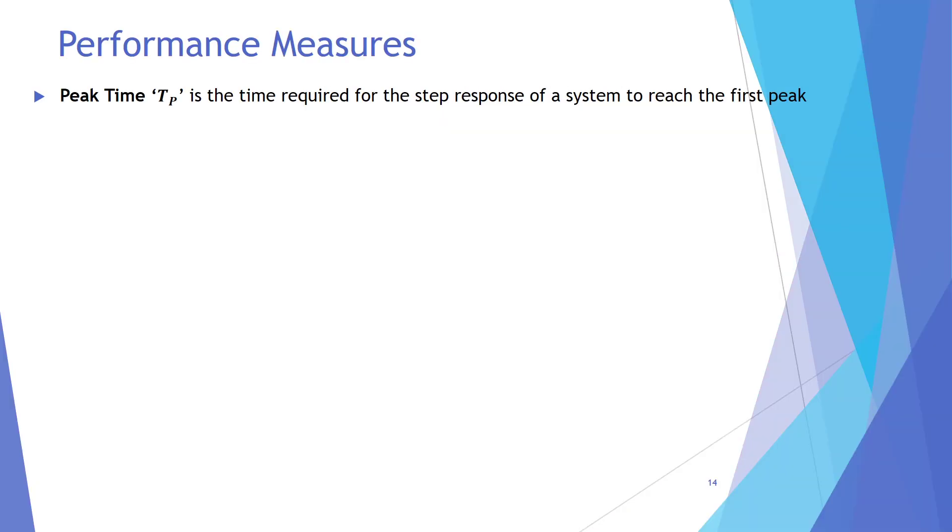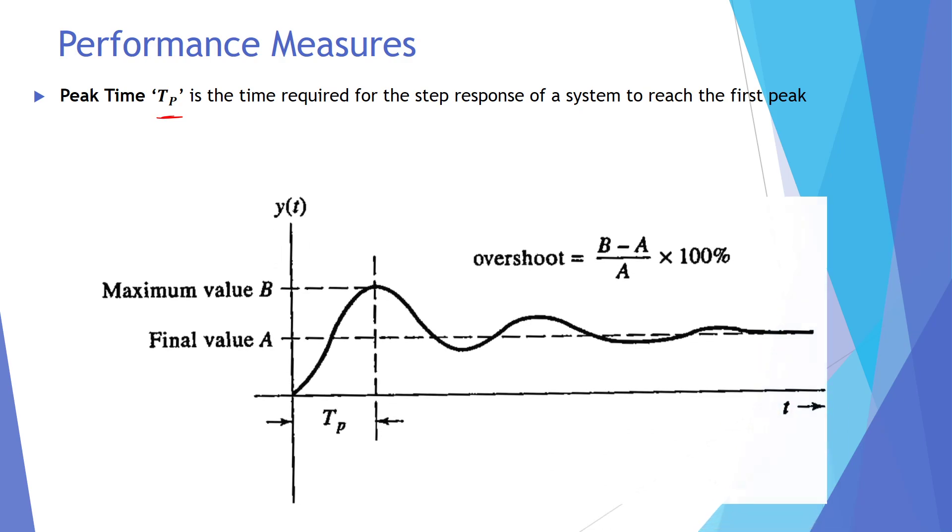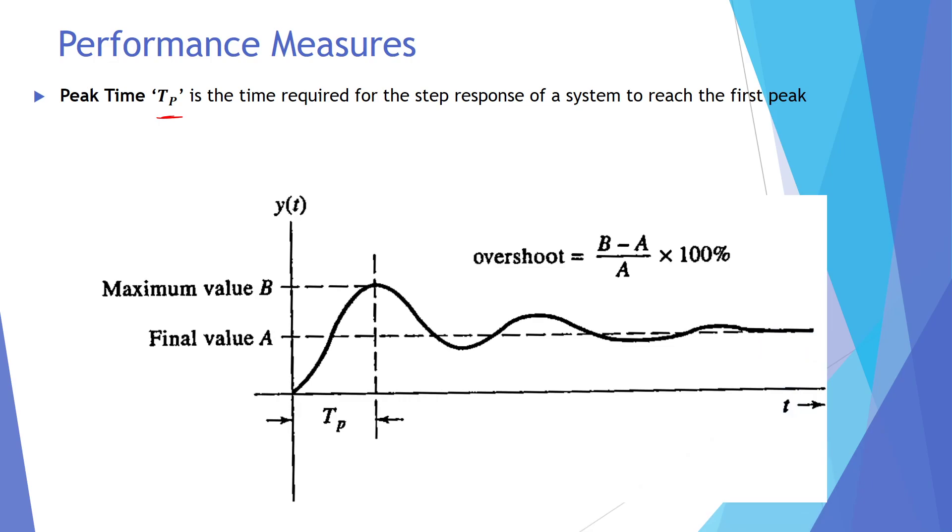The next performance measure is peak time, which is represented as tp. Peak time is the time required for the response to reach its first peak. For example, on step response, the first peak ko achieve karne tak ke liye jo time required, that is the peak time.